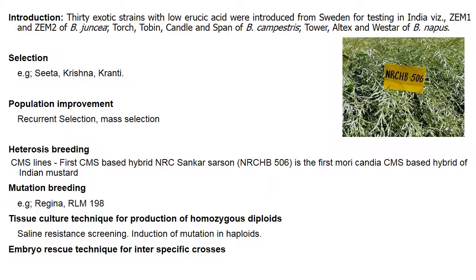Some achievements through different breeding methods: through introduction, 30 exotic strains with low erucic acid were introduced from Sweden for testing in India, including Zem-1 and Zem-2 of Brassica juncea; Torch, Tobin, Candle, and Span of Brassica campestris; Tover, Ultex, and Wester of Brassica napus. Through selection: Sita, Krishna, Kranti. For population improvement, recurrent selection and mass selection are important tools.